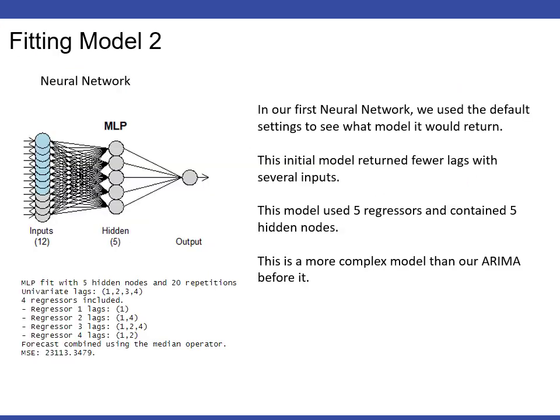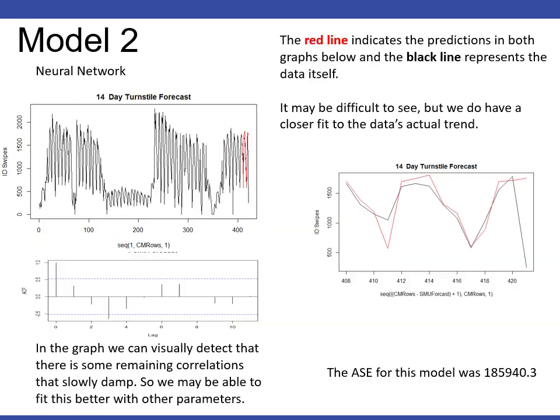In our first neural network, we used the default settings just to see what would turn out. And this initial model returned fewer lags with several inputs. This model used five regressors and contained five hidden nodes. And it's a bit more complex than the ARIMA, but did perform better. The red line indicates the predictions in both graphs below and the black represents the data itself. It may be difficult to see, but we do have a closer fit and the data's actual trend.